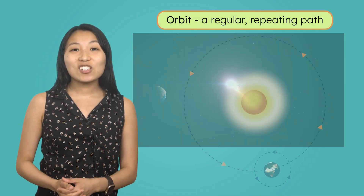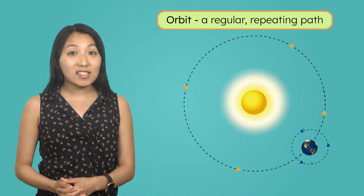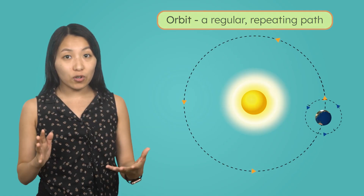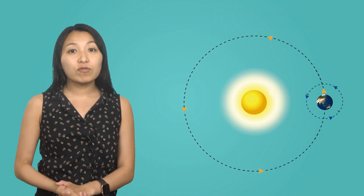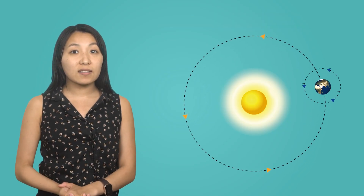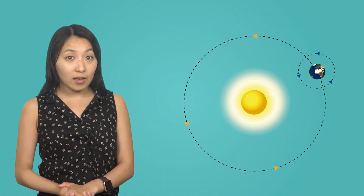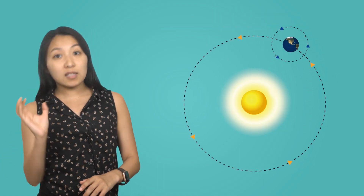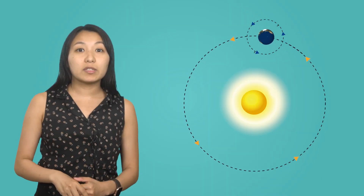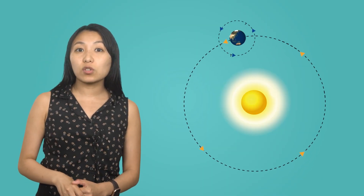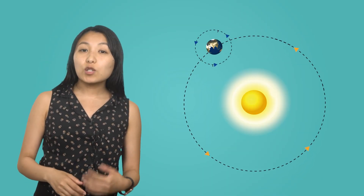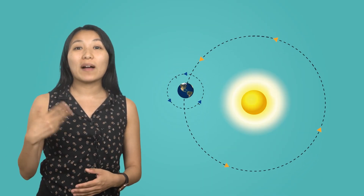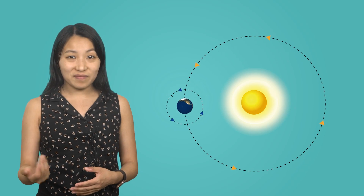As Earth travels along this path, its tilt causes different parts of Earth to receive more direct sunlight at different times. This tilt, in combination with Earth's orbit, is why we experience different seasons throughout the year.